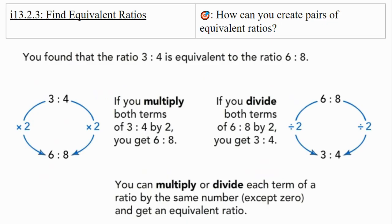Moving to the next part: we found that the ratio three to four is equivalent to six to eight. If we go from three to four up to six to eight, it's getting bigger — that's multiplication. Multiply both terms of three to four by two, and you get six to eight. Going from six to eight back to three to four is getting smaller — that's division. Divide both terms of six to eight by two and you get three to four. You can multiply or divide each term of a ratio by the same number (except zero) to get an equivalent ratio.